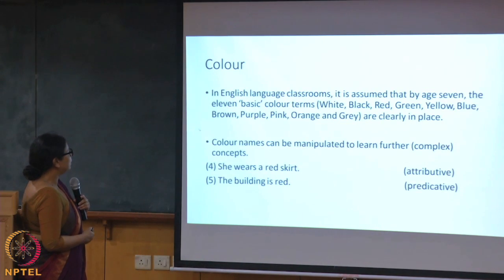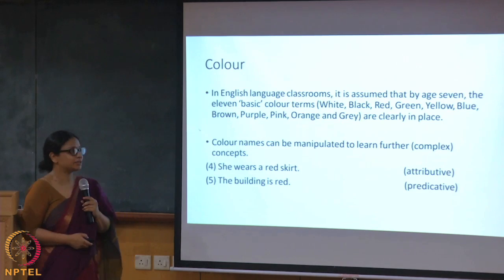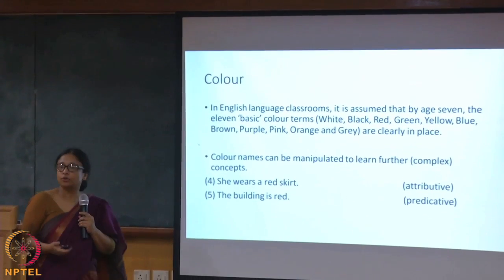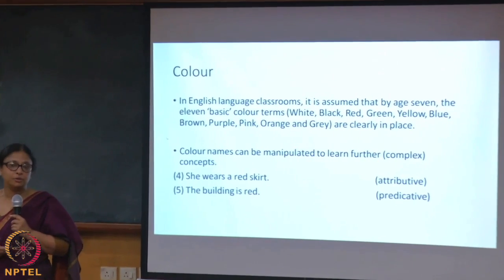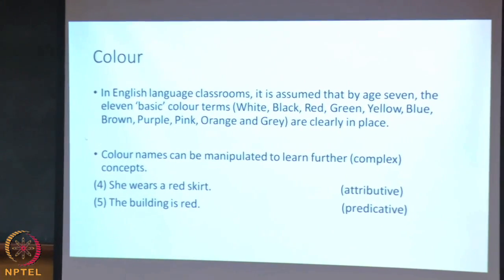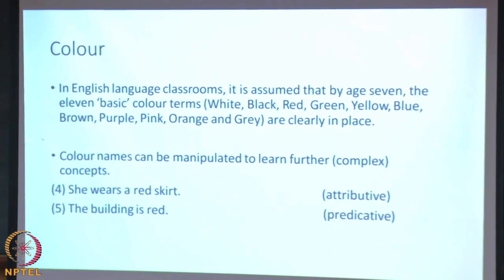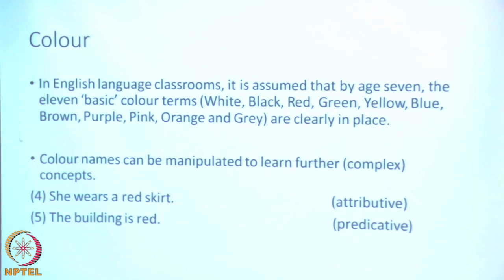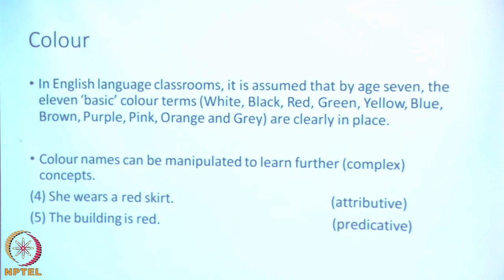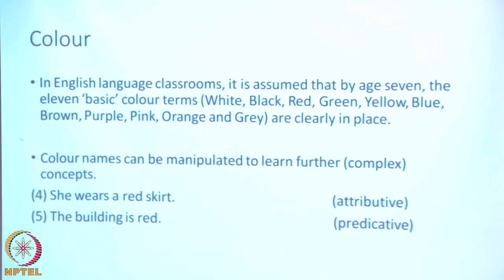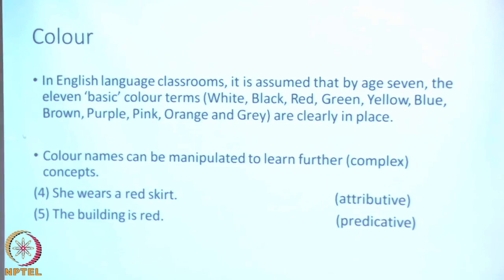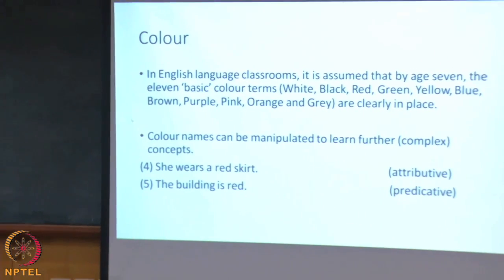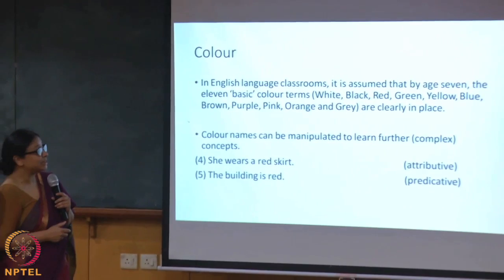Since I'm here for applied linguistics, here's a question: how would language pedagogues take this study into the classroom? From existing studies, we know that in English language classrooms, by age 7-8, the 11 basic color terms — black, white, red, green, yellow, blue, brown, purple, pink, orange, and gray — are clearly in place. The teacher can then use these color terms to learn further complex concepts.